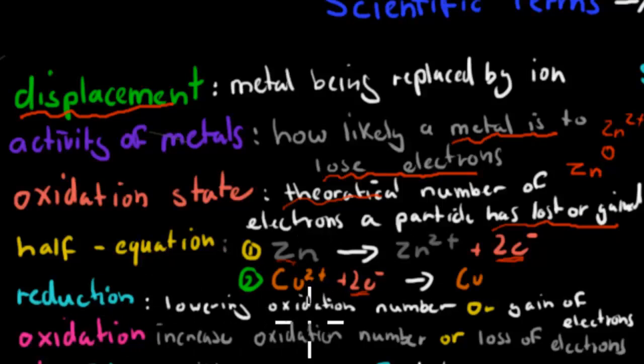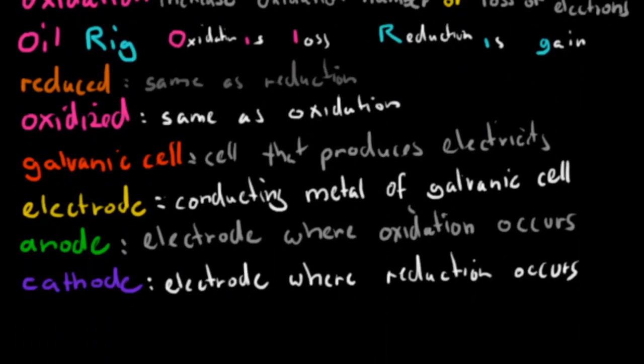Reduction was the lowering of the oxidation number or the gain of electrons. So for example, here we have copper which is 2+ here, and copper elemental is zero, so it's gone from 2+ to zero, which means it's been reduced or reduction has occurred. And also another way of looking at it is it's gained electrons. Whereas oxidation is the increase in the oxidation number or loss of electrons. In this case, it's gone from zero to two, so it's increased oxidation number, or we could also view it as it's lost electrons.